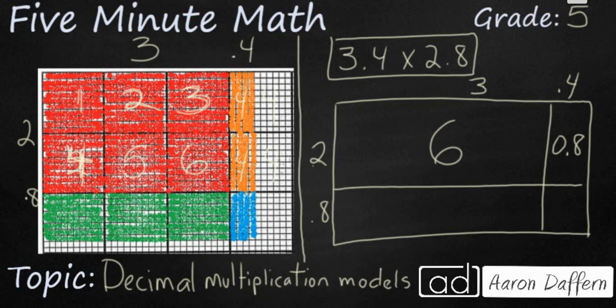Now we're going to multiply our 3 wholes times our 0.8. So 3 times 8 is 24. So 3 groups of 8 tenths is going to be 2.4. 8 tenths and 8 tenths and 8 tenths makes 2.4.